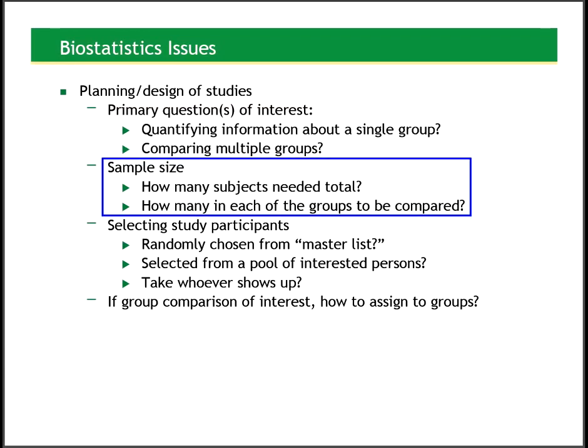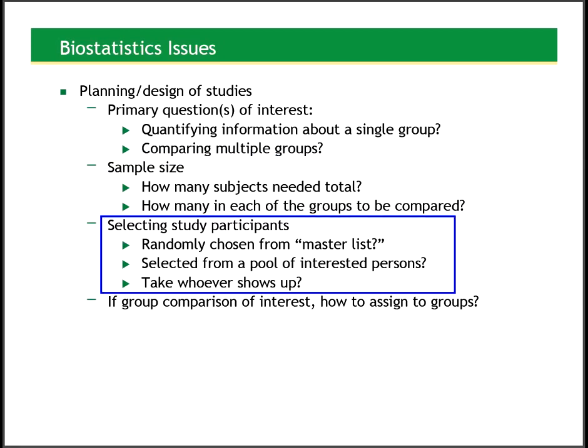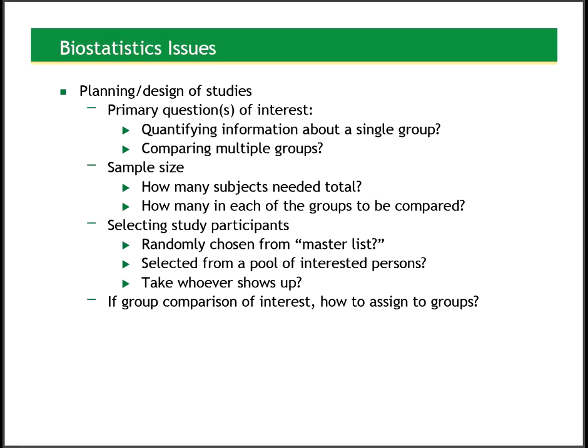Biostatistics can help with determining the sample size — how many subjects do we need altogether in this study, and if we're comparing groups, how many do we need in each group? Biostatistics can also help with choosing the study participants. Are we able to randomly choose them from a master list of everyone in the population we want to study? Are we going to randomly select them from a pool of interested persons who agreed to be in the study if selected? Or are we going to take whoever shows up? All of this depends on the context, how easy it is to get study subjects, and many other concerns.